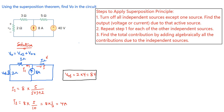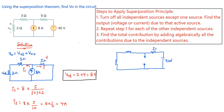Now let's find V02. I'm going to redraw the circuit without the current source — for that I will open circuit the current source so that only the voltage source acts alone. So we open circuit that terminal, and we have 5 ohms, then the 40 volts source, then 5 ohms, 3 ohms, and 2 ohms. This is the circuit now, and this is where V02 will be measured.